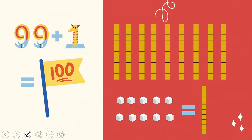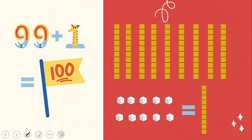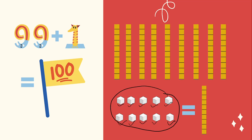Coming back to 100. We have nine rods of tens and nine units of ones. When we add one more ones to 99, we have nine units of ones plus one more: 1, 2, 3, 4, 5, 6, 7, 8, 9 and one more — that is ten ones. So, ten units of ones all together make one rod of tens. You can count ten small units of ones making one big ten.